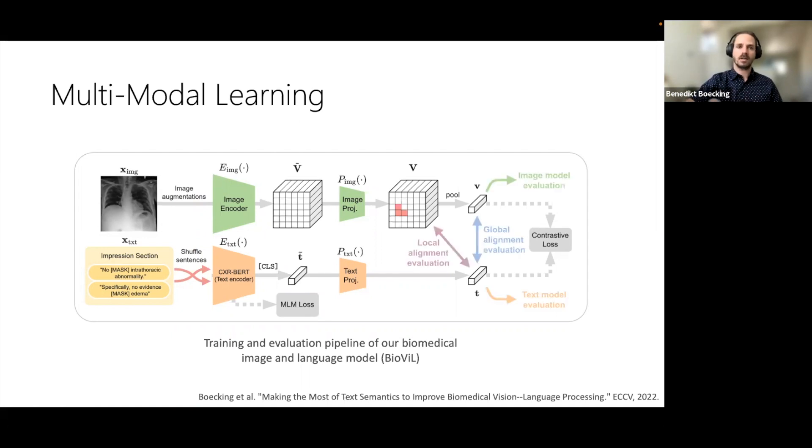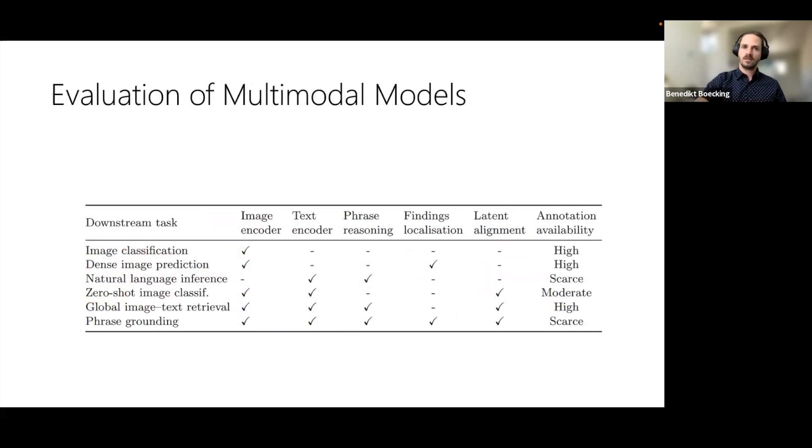But our analysis mostly focuses on how we can extend common evaluations of these joint models and how powerful the improvements from better text modeling are, even when we only rely on learning with global representations. So the existing literature focuses mainly on evaluating images alone or on joint retrieval, and largely on global image text aspects.